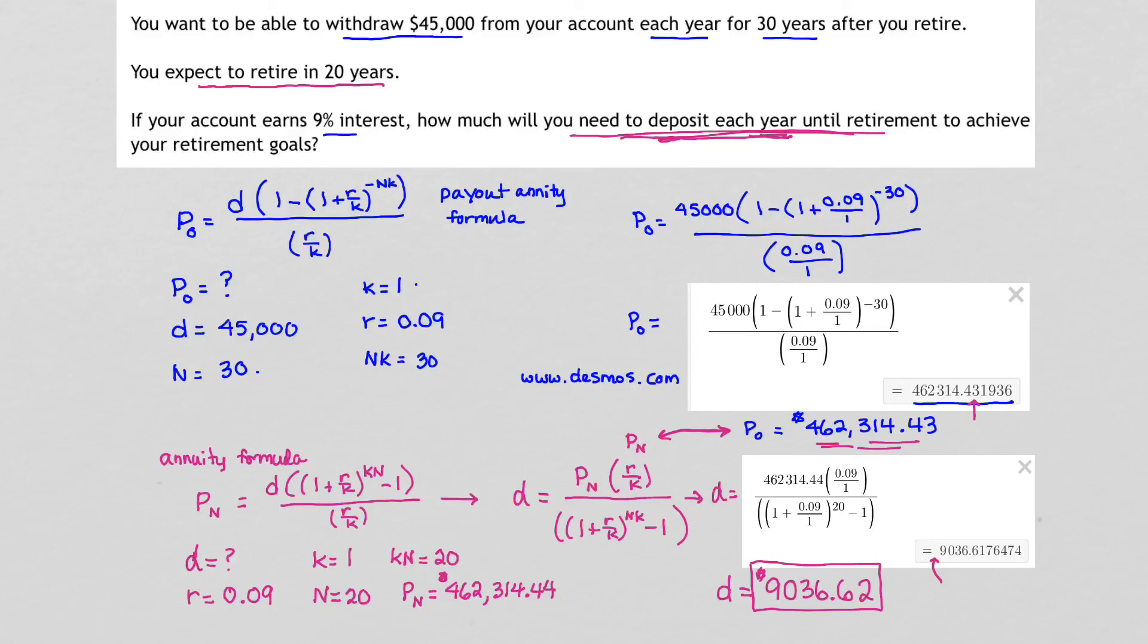To summarize, this problem involved two parts. We had to start with our payout annuity formula to calculate how much money we needed in our retirement account, and then we had to use our annuity formula to determine how much each year we needed to deposit to make that amount of money. Good luck as you work this problem out.